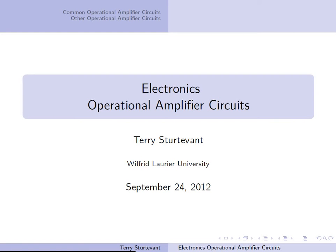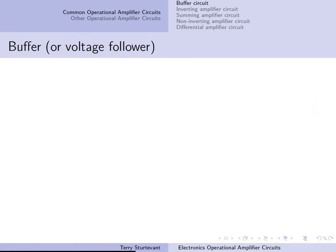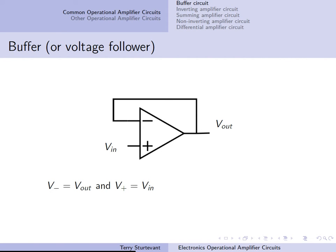This video is about operational amplifier circuits. The simplest operational amplifier circuit you can have is the buffer or voltage follower, where the output follows the input.